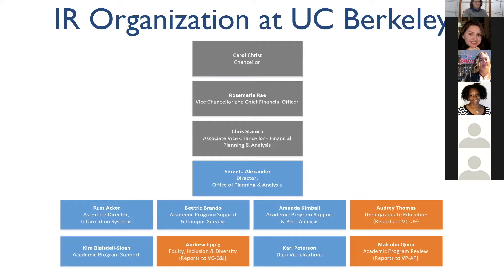Andrew does some things that are slightly different than what we do in OPA. He supports academic requests for data, helping faculty members and graduate students who are doing research. The Office of Planning and Analysis does not support those kinds of data requests, but Andrew will talk a little bit more about what he does.